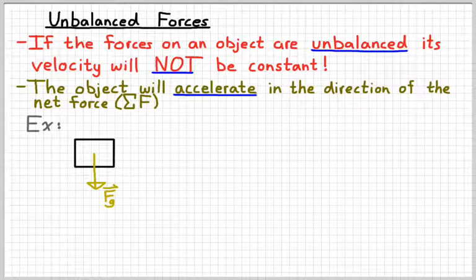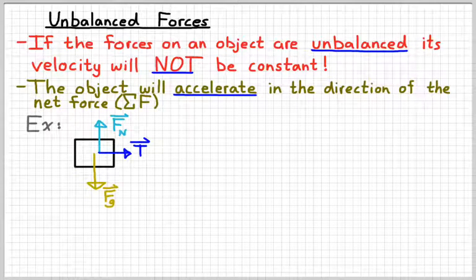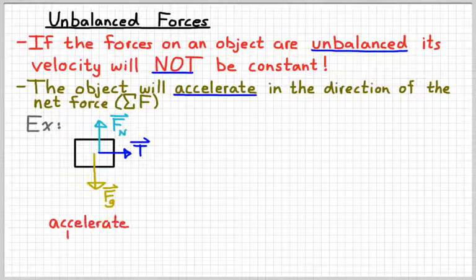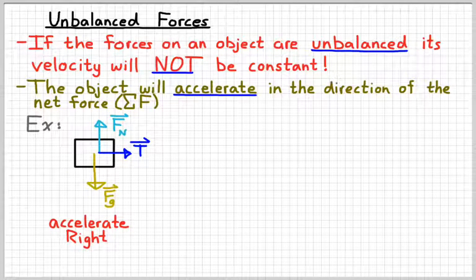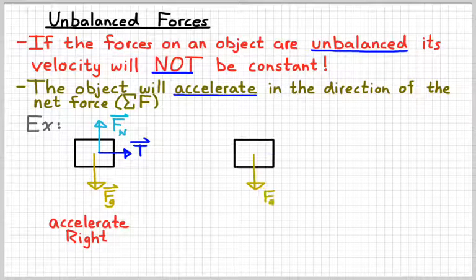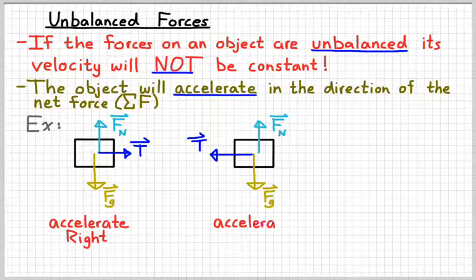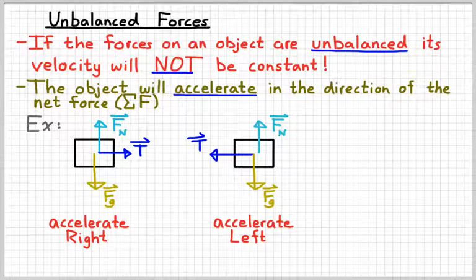Suppose we have something where we have an unbalanced force going to the right. In this situation the object is going to accelerate to the right — either it's going to be moving to the right and speeding up, or moving to the left and slowing down. Either way, the acceleration will be to the right. If we were to reverse the direction of that blue tension arrow, then the object is going to accelerate to the left, because the net force is pointing to the left — the ups and downs balance, the one left over is to the left.